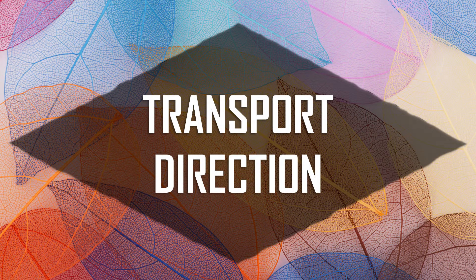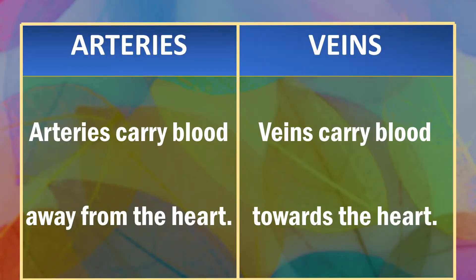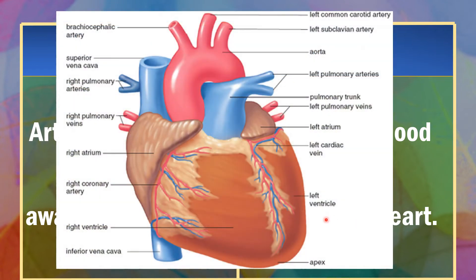Our first factor is going to be the transport direction of the blood. Arteries carry blood away from the heart while veins carry blood towards the heart. In this diagram of the heart, we can see the superior vena cava, which is one of the largest veins in the human body. It brings blood into the heart.